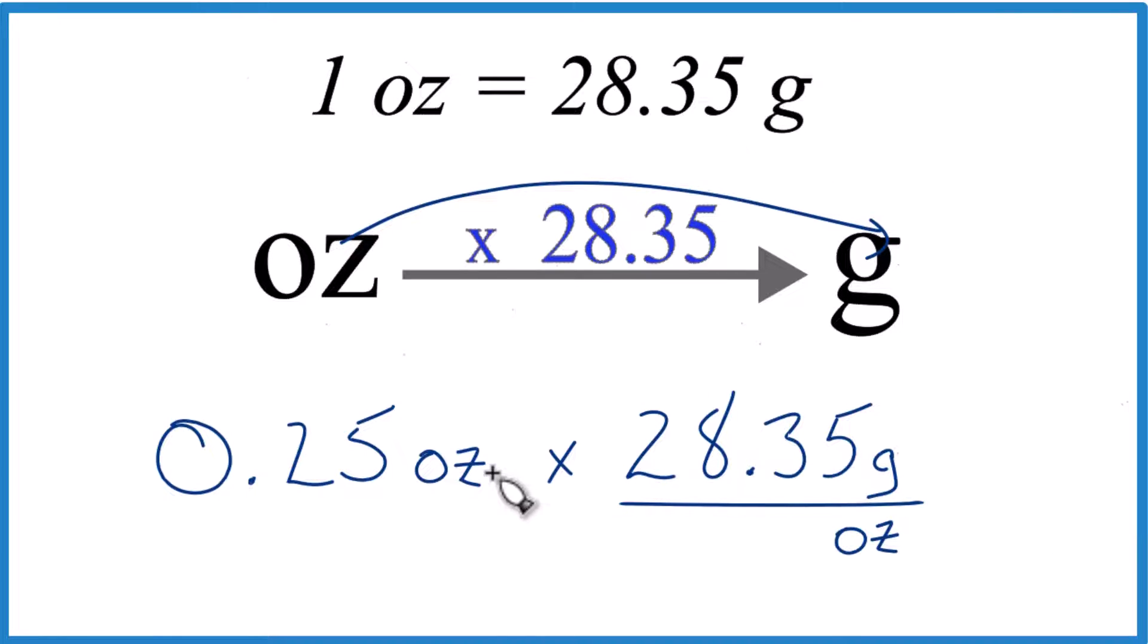What's nice is when we multiply, since we have ounces on the top and the bottom, they cancel out. We're left with grams, which is what we're looking for.